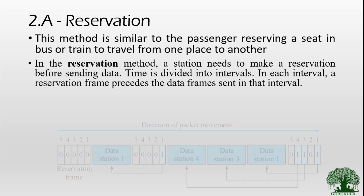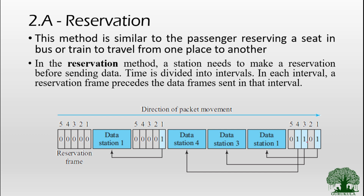Time is divided into several intervals and in each interval a reservation frame precedes the data frame. When you look at the image it will be very clear. This frame is what we call the reservation frame. Whenever a station wants to send data it has to reserve a particular slot in this reservation frame. As you can see, station 1, station 3, and station 4 have reserved a slot to transmit a frame. Followed by the reservation frame you have the data frame, and only those stations that reserved in the reservation frame are allowed to send and receive data.